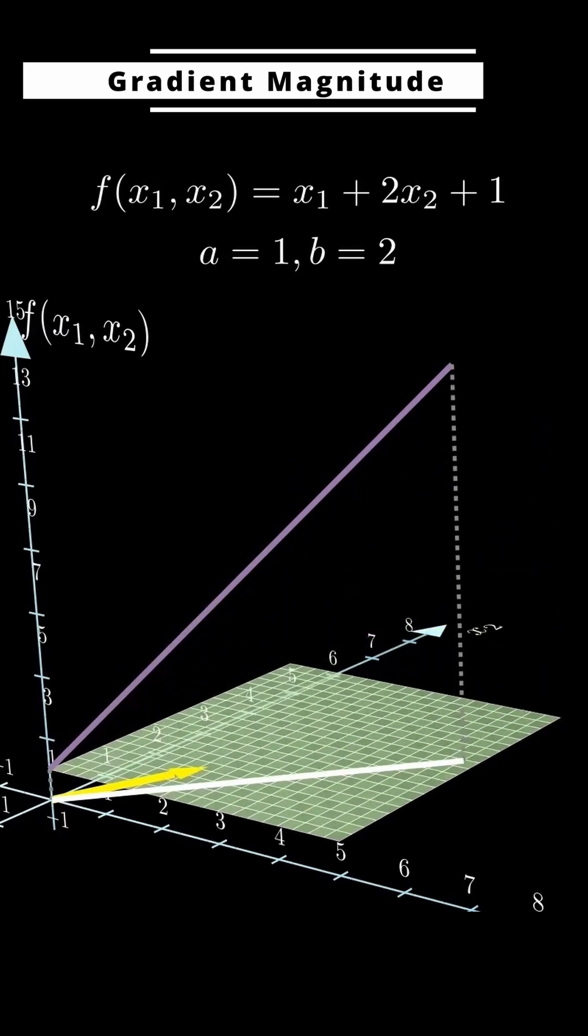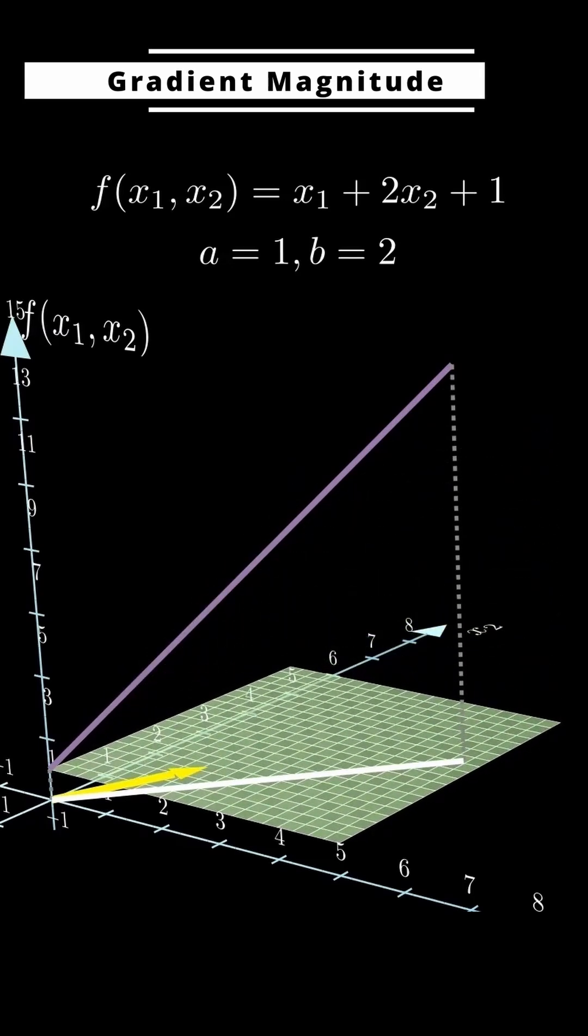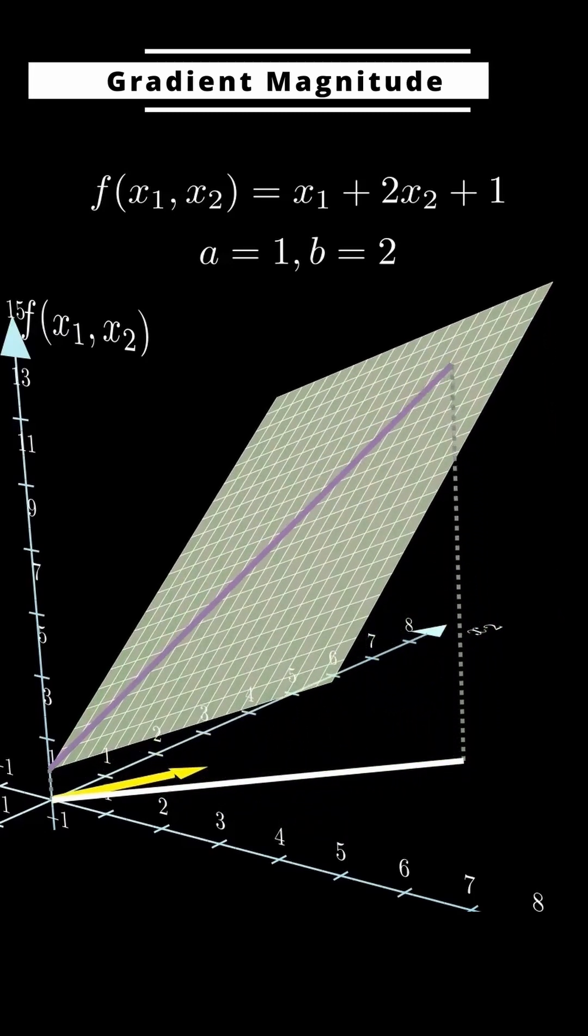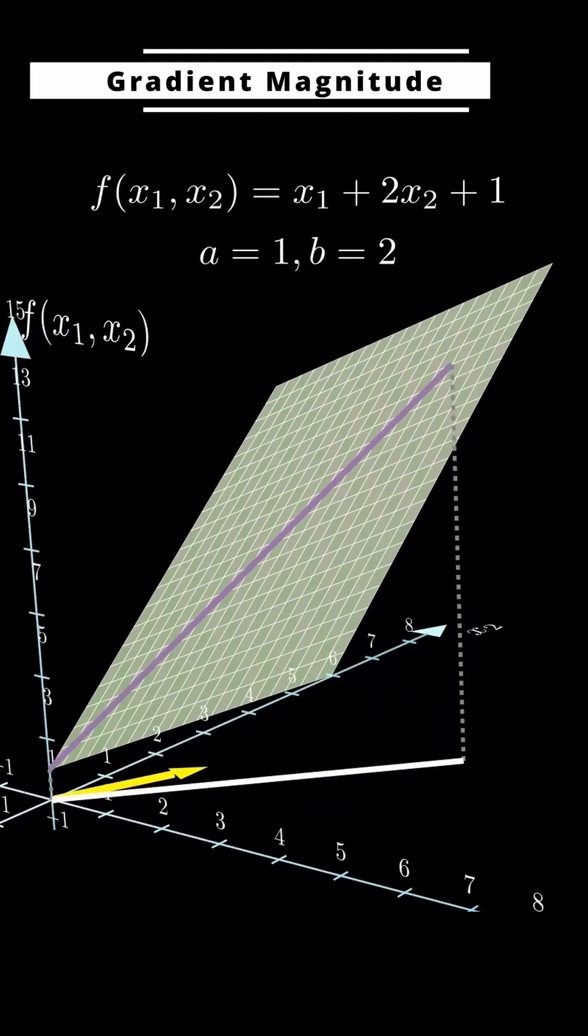It actually tells us how fast the function value goes up if we move in the gradient direction. So the gradient's magnitude is really the slope in the steepest direction.